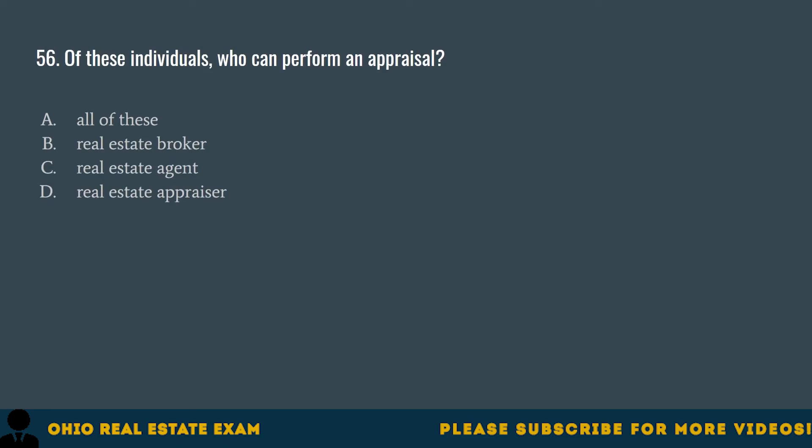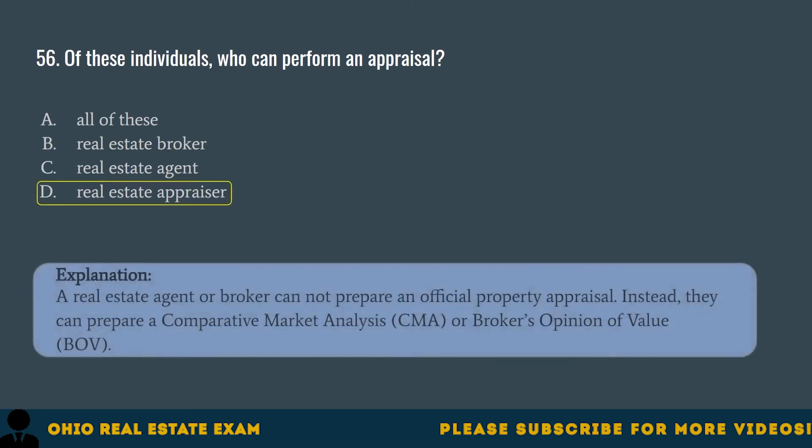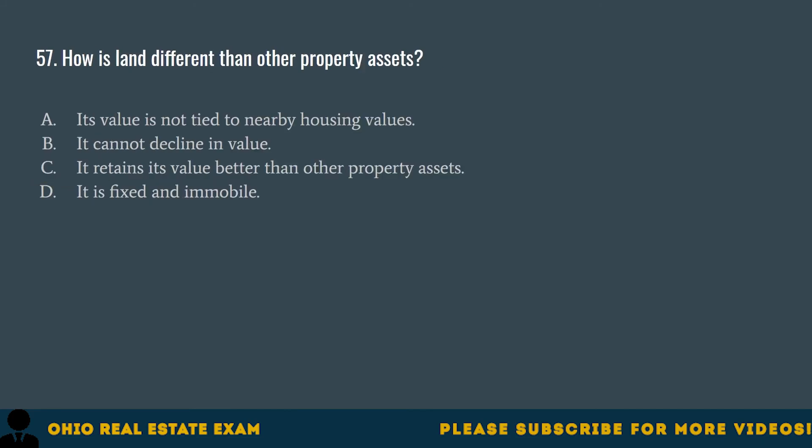Question 56. Of these individuals, who can perform an appraisal? A. All of these. B. Real estate broker. C. Real estate agent. D. Real estate appraiser. The correct answer is D. Real estate appraiser. A real estate agent or broker cannot prepare an official property appraisal. Instead, they can prepare a comparative market analysis (CMA) or broker's opinion of value (BOV).